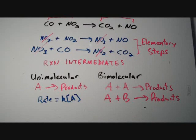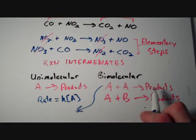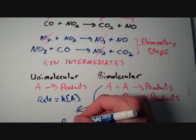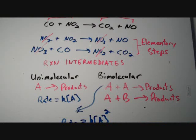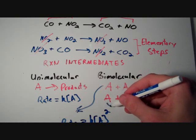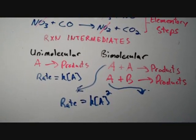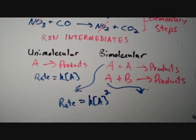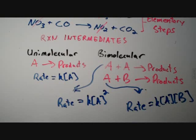For bimolecular elementary steps, the rate laws are as follows. For A plus A yielding products, the rate equals k times the concentration of A squared. For A plus B yielding products, the rate equals k times the concentration of A times the concentration of B.